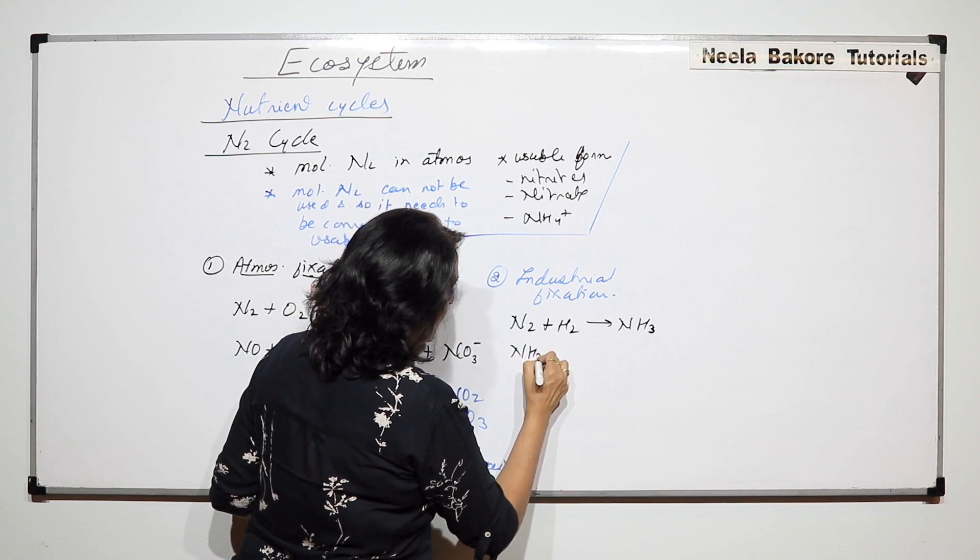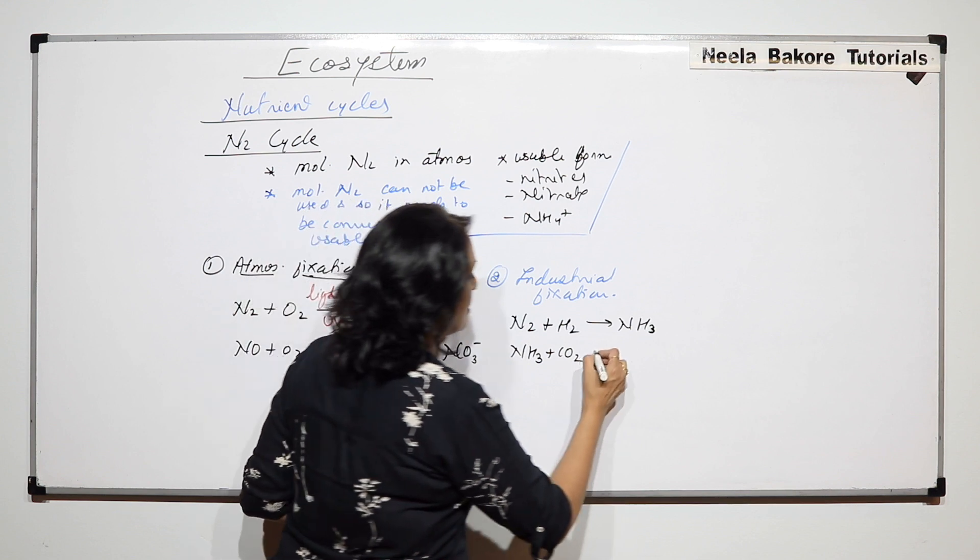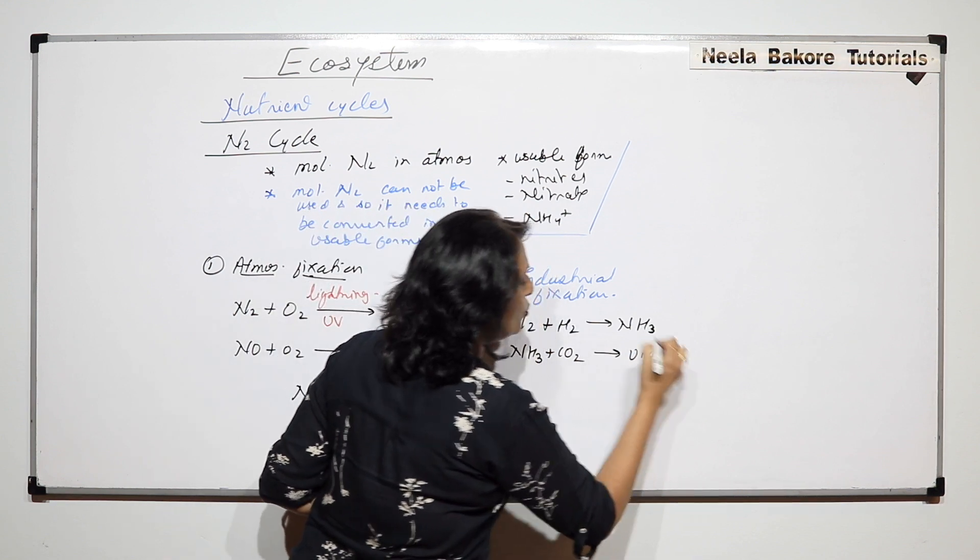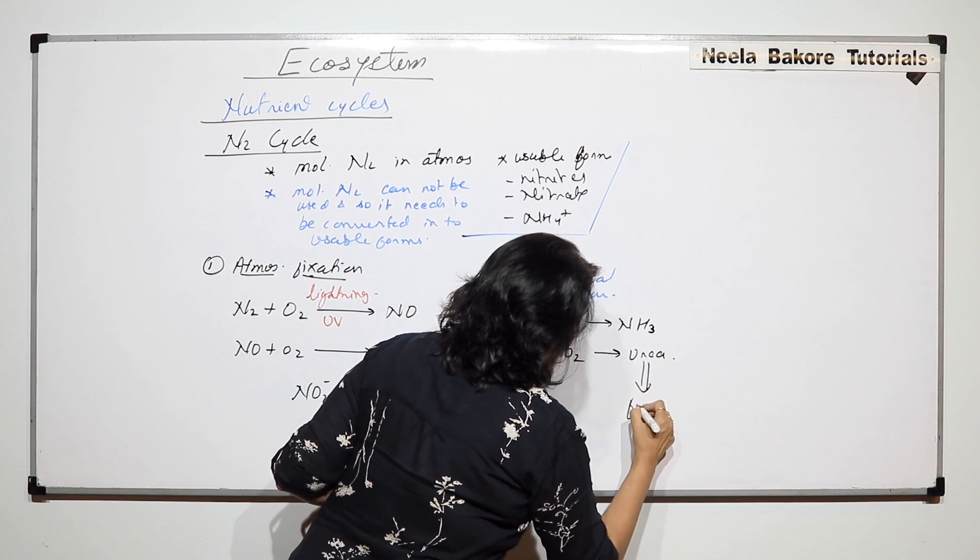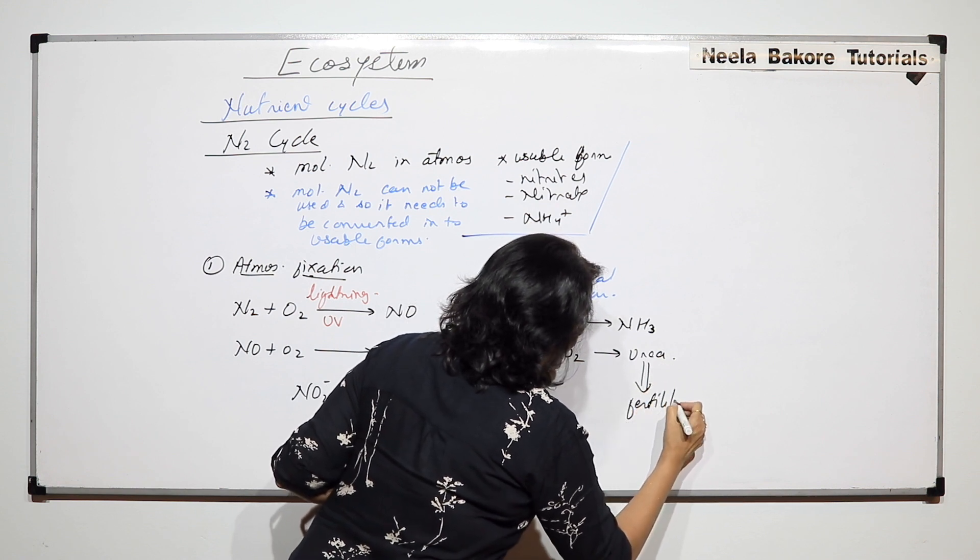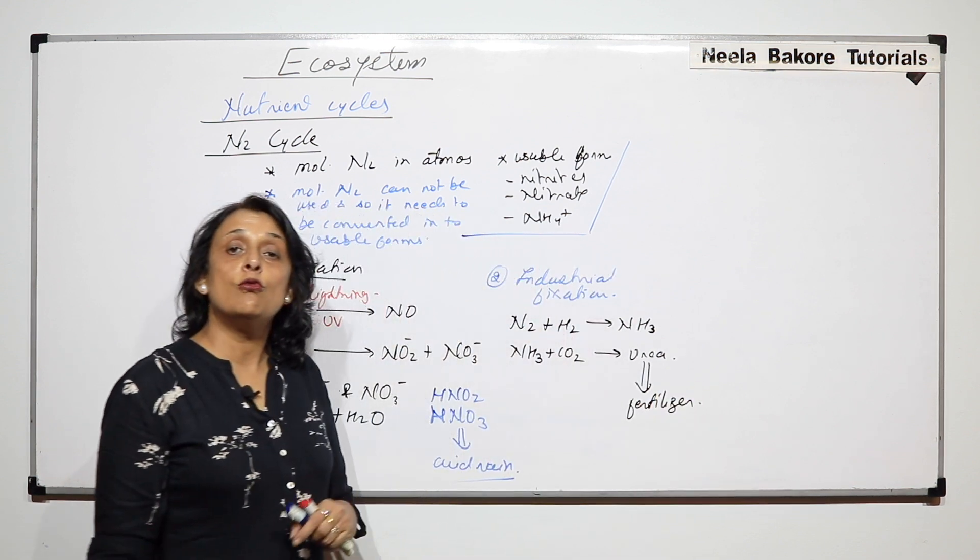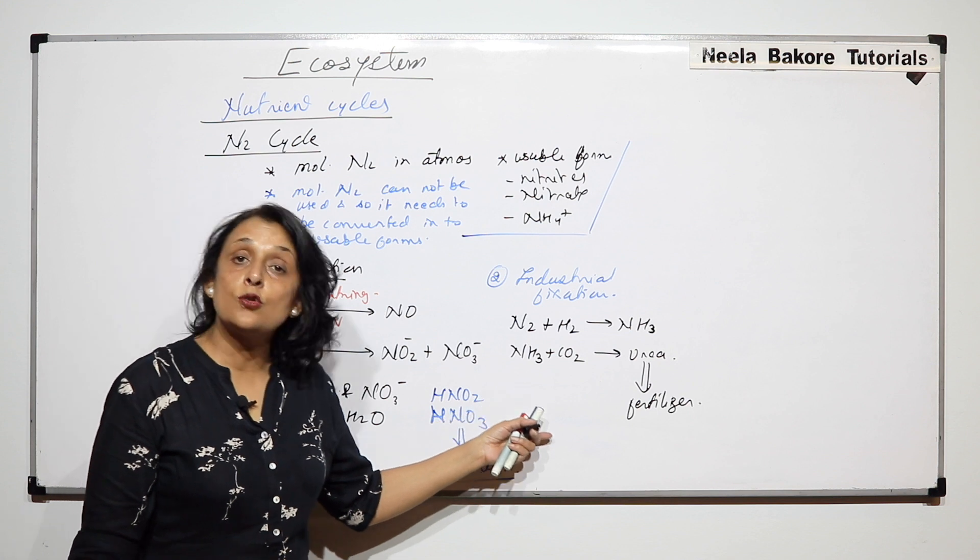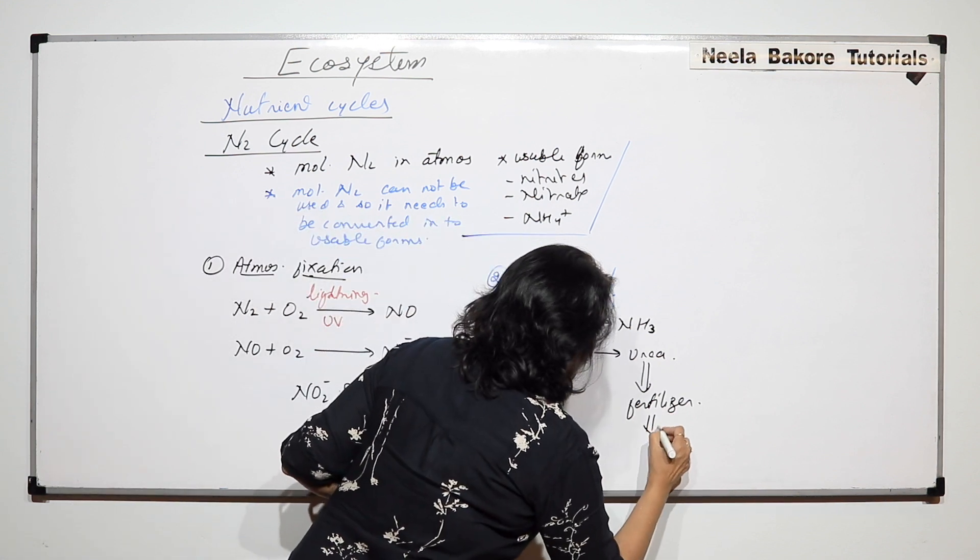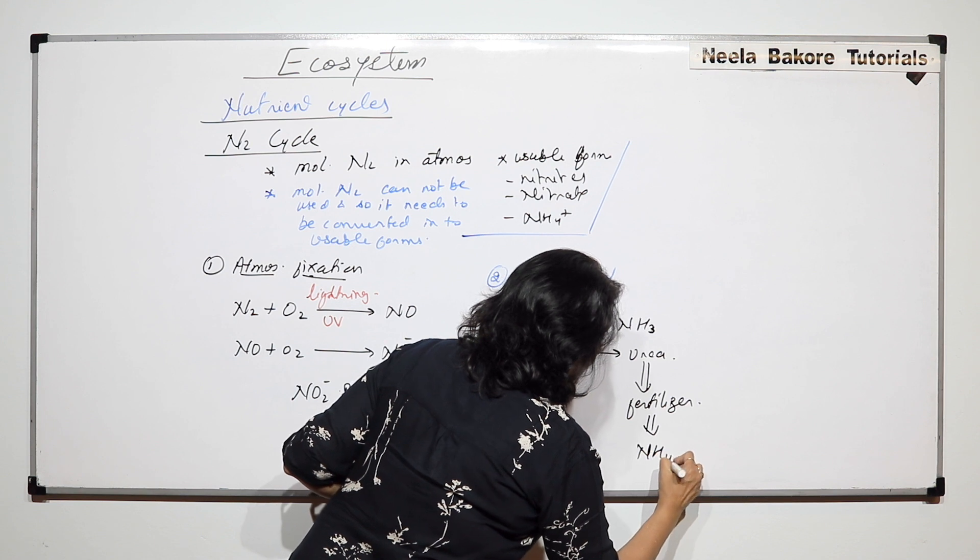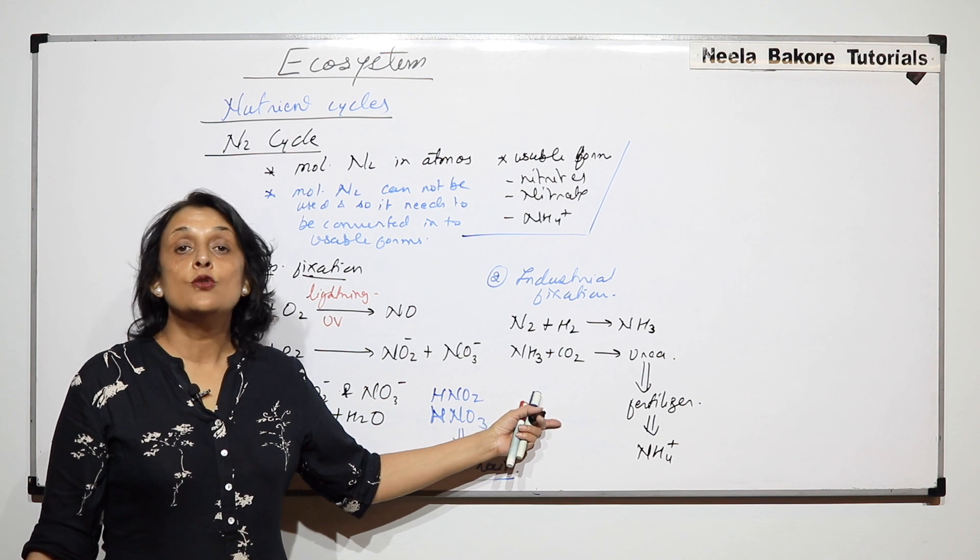Molecular nitrogen is made to react with hydrogen to form ammonia. This is not a balanced equation but we can balance it. Then ammonia is made to react with carbon dioxide and here we get urea. This urea is added into the soil as fertilizer. And this urea then dissociates in the soil to release ammonium ion.